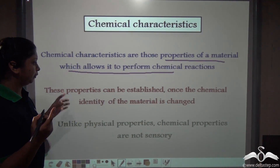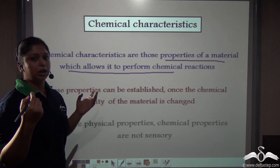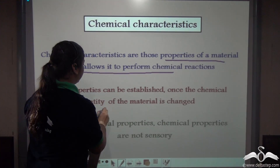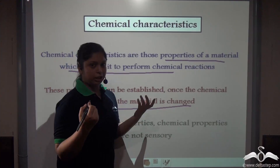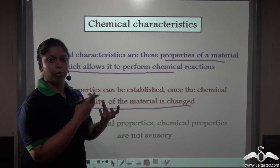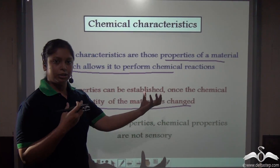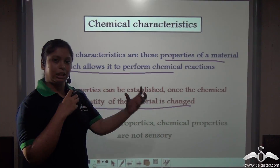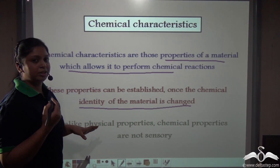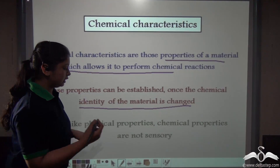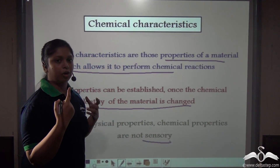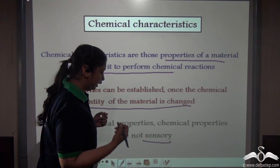The chemical property can only be determined when the chemical identity of the material is changed. So suppose the substance reacts with water and forms something different — the chemical nature has been changed. So it differs from physical properties in that it is not sensory; it cannot be determined by viewing, touching, or smelling the substance.